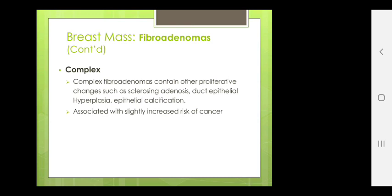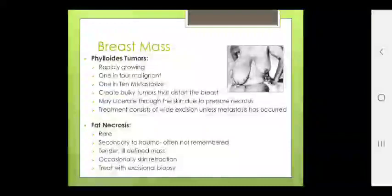Breast mass may be seen in phyllodes tumor or fat necrosis. Phyllodes tumor is rapidly growing, 1 in 4 malignant, 1 in 10 metastasizes, creates bulky tumors that distort the breast and may ulcerate the skin due to pressure necrosis. Treatment consists of wide excision unless metastasis has occurred. Fat necrosis is very rare, secondary to trauma, presenting as tender, well-defined mass, occasionally with skin retraction. Treated with excision biopsy.